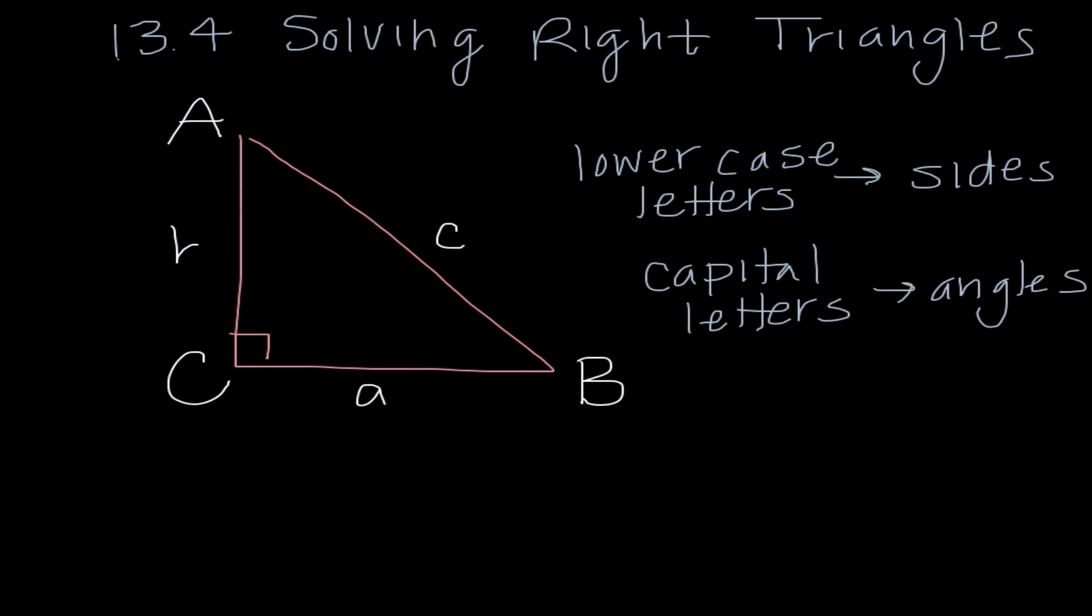Here's angle B and there is side B. This is helpful because it's an easy way for me to know what sides are opposite what angles. The big thing is we always use C for our right angle, so side C is always our hypotenuse.